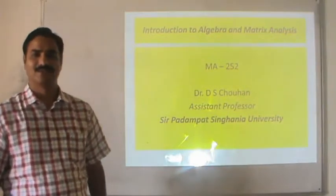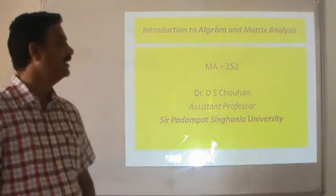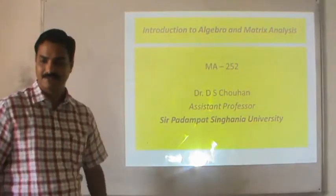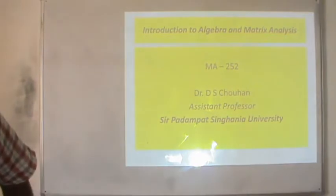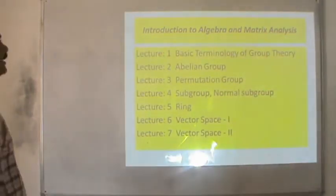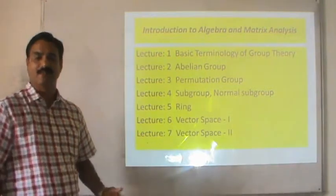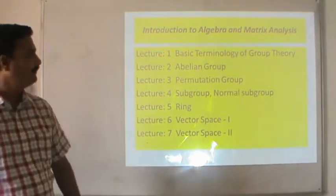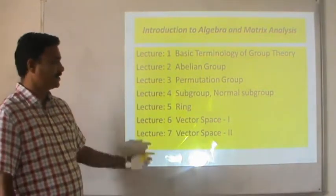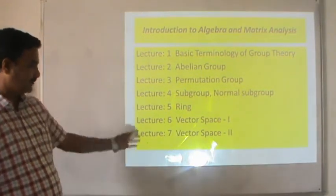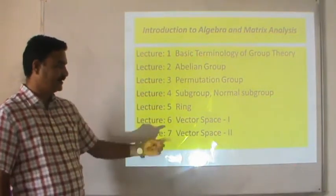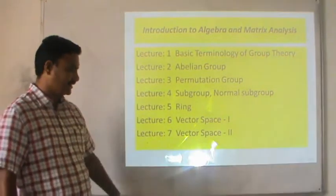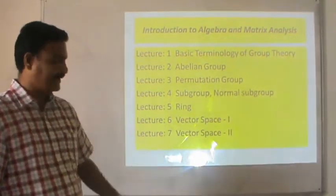Today I am going to do my lecture on Vector Spaces. My title is Introduction to Asset and Metrics Analysis. In the very first lecture, we discussed some basic terminology of group theory, then a gradient group, permutation group, subgroup, and normal subgroup. In lecture 5 we discussed weight, in lecture 6 we discussed vector space part 1, and now in lecture 7 we discuss vector spaces part 2.